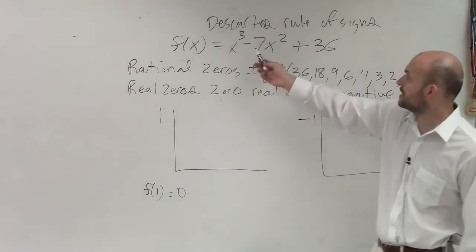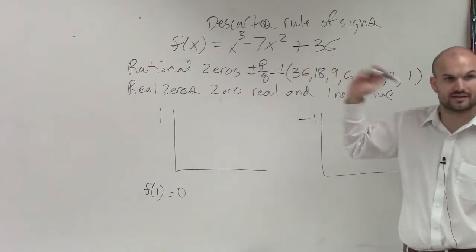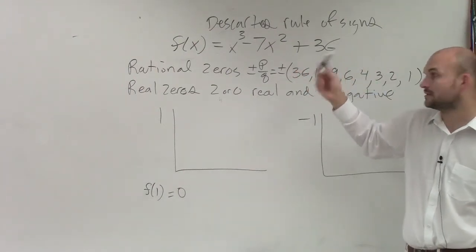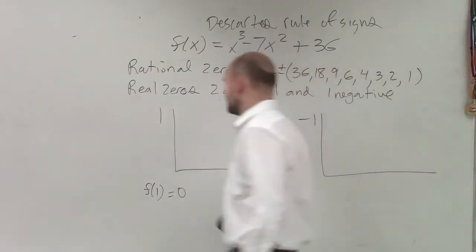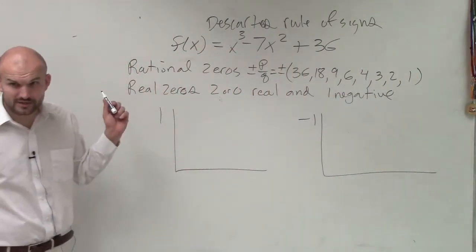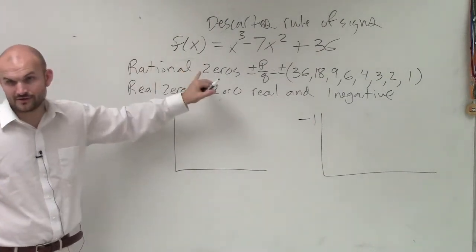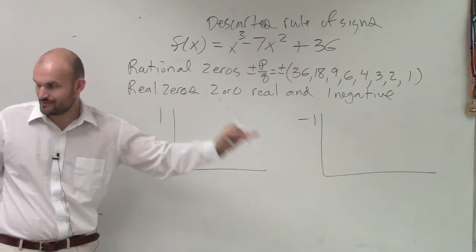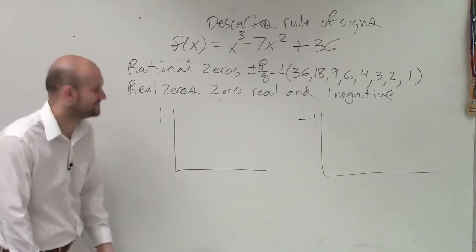So you guys could probably look at this and say, all right, if I put 1 in here, is that going to make it 0? And I can already initially know that 1 is not going to work. And if I plug in negative 1, I know negative 1 is not going to work. But what's the fun in doing that? Remember, whatever you plug in in the remainder theorem, that's your remainder of synthetic division. Do you guys remember the remainder theorem?